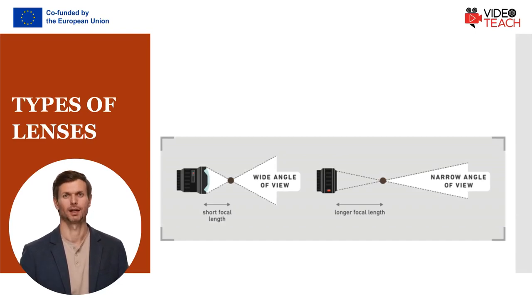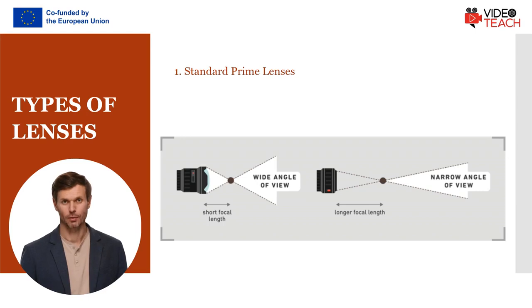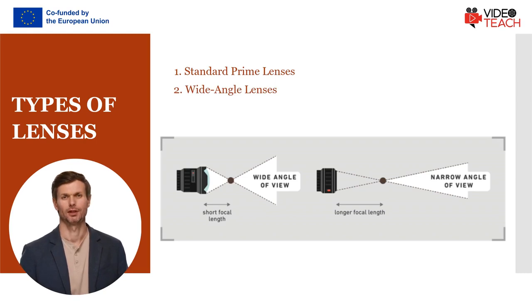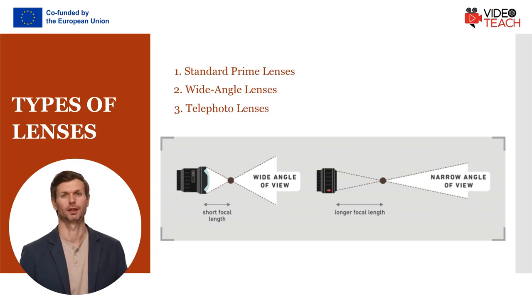There are different types of lenses. Standard prime lenses have a fixed focal length, for example 50mm, and no zoom capabilities. They are known for their sharpness and wide apertures, and are often used for portraits and general purpose photography. Wide-angle lenses have a short focal length, capturing a broad field of view. They are ideal for landscapes, architecture, and situations where you want to include more of the scene in the frame. Telephoto lenses have a long focal length, allowing you to capture distant subjects with greater detail. They are commonly used in wildlife photography, sports, and situations where physical proximity to the subject is limited.